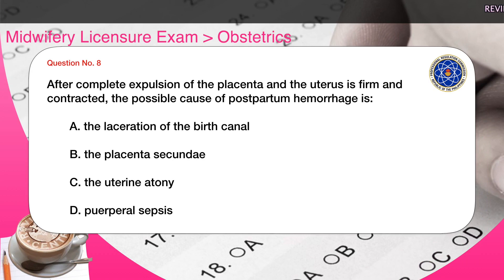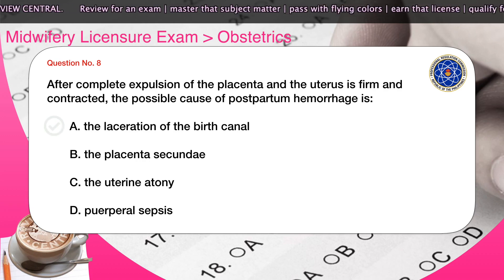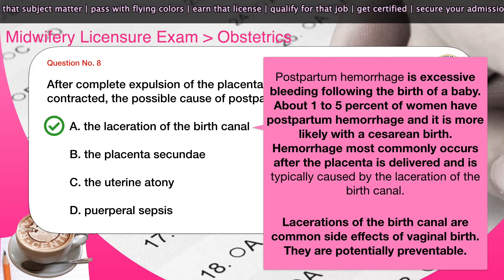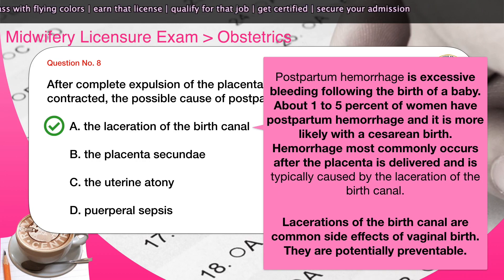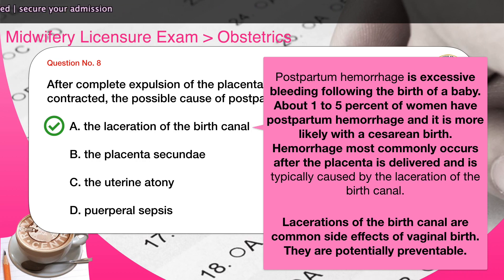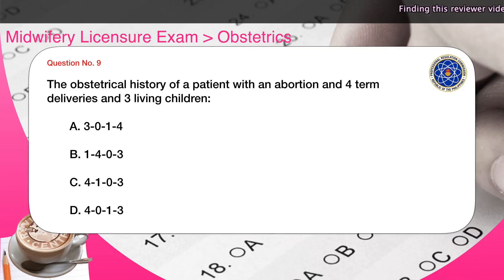Question number eight: After complete expulsion of the placenta and the uterus is firm and contracted, the possible cause of postpartum hemorrhage is — A) laceration of the birth canal, B) placenta secundina, C) uterine atony, D) puerperal sepsis. The correct answer is A. Postpartum hemorrhage is excessive bleeding following the birth of a baby, occurring in about one to five percent of women. Hemorrhage most commonly occurs after the placenta is delivered and is typically caused by laceration of the birth canal, which is a common and potentially preventable side effect of vaginal birth.